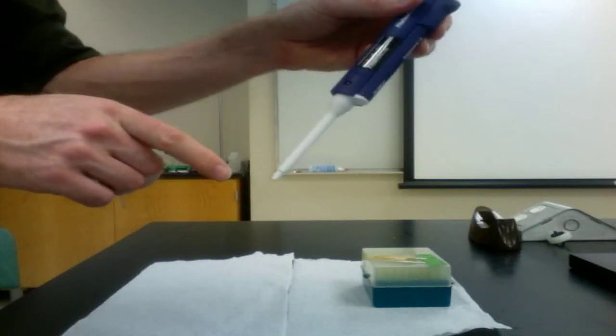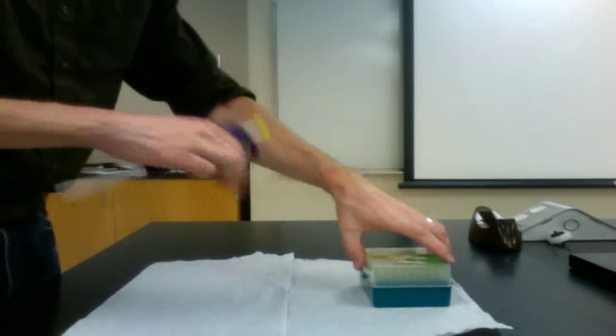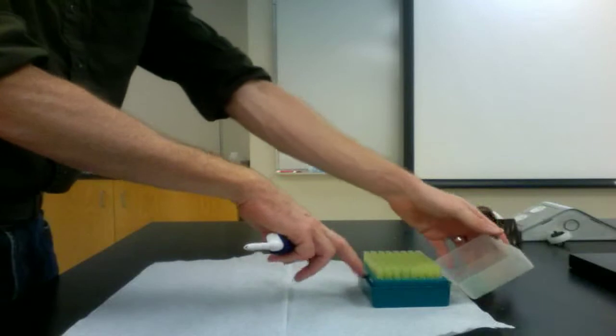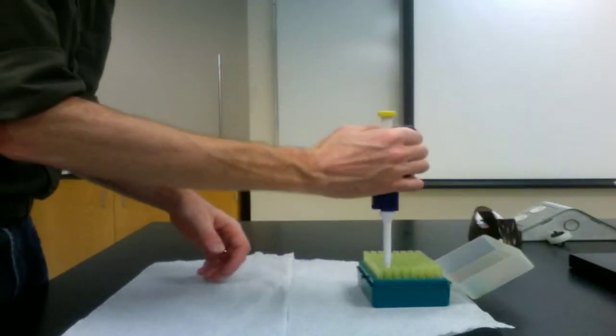Before using the micropipette, make sure that you have a tip in place. Simply press the tip of the micropipette down into one of the tips in the box and it will attach.